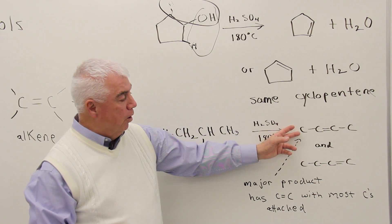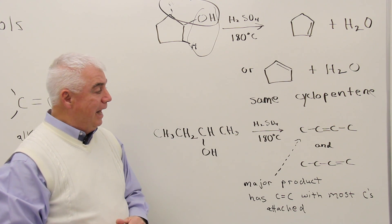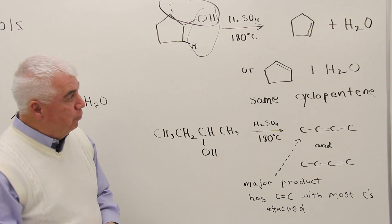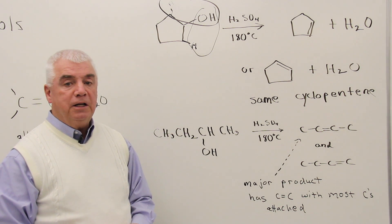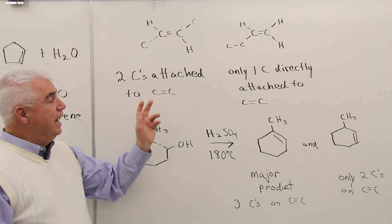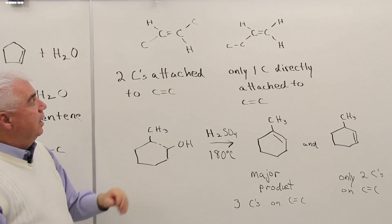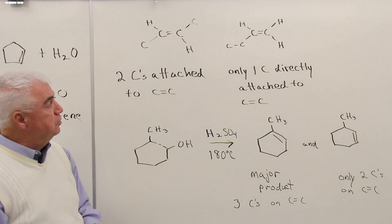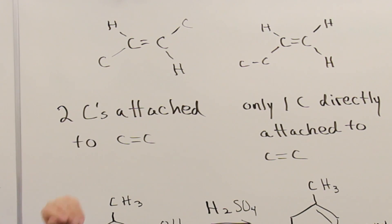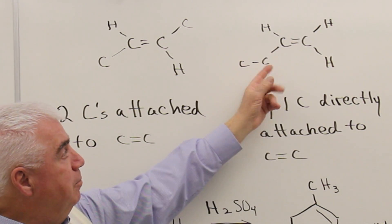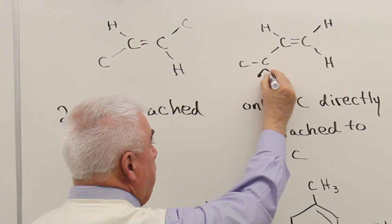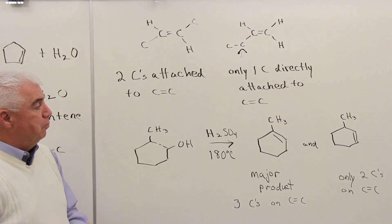The product that tends to form is the one in which the carbon-carbon double bond has the most carbons attached. Let's expand both of these carbon-carbon double bonds and count the carbons that are directly attached to those double bonds. Here's the carbon-carbon double bond, and I see that this carbon and this carbon up here are directly attached, so there are two carbons attached to this double bond. Over here, there are three hydrogens, meaning only one carbon is directly attached to the carbons of the double bond.